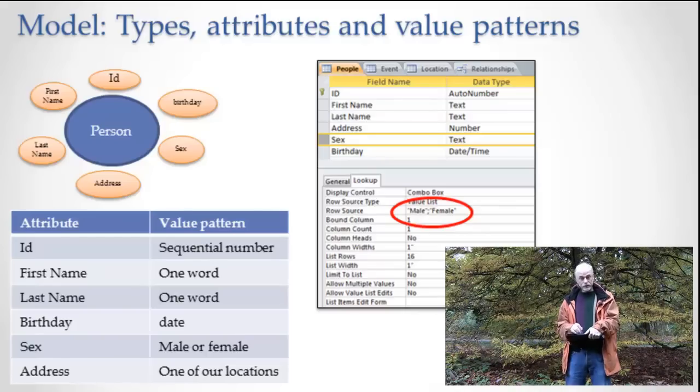So, we have the table. It's the people table. We have a set of attributes. ID, first name, last name, address, sex, birthday. Notice it matches exactly with our model over here.